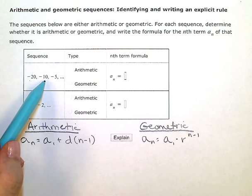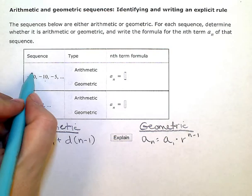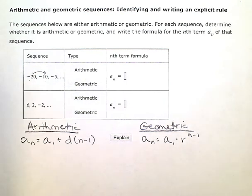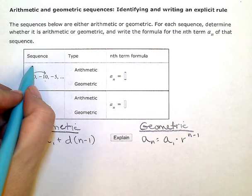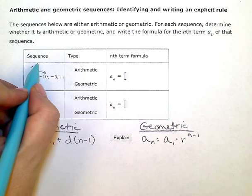To get from negative 20 to negative 10, I would divide by a positive 2. However, when we're talking sequences, we never talk about the common ratio in terms of divide—it's always multiplying. So instead of divide by 2, I would write this as multiplying by 1/2.